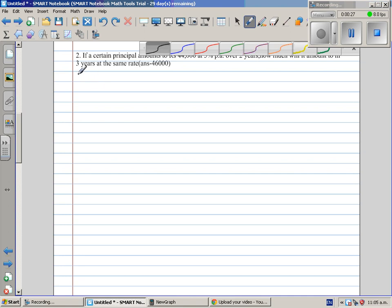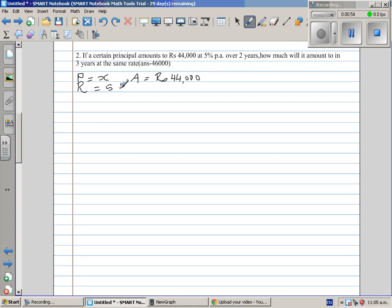So we want to find principle, we don't know, a certain principle. So let me write that as X. The amount is 44,000 rupees, which has principle plus interest. Your rate is 5% per annum. Now rate of interest is always per 100 per annum. And this is simple interest and number of years is 2.